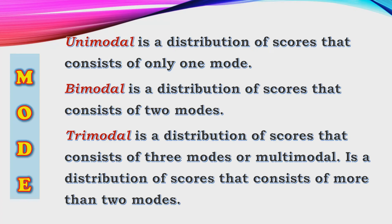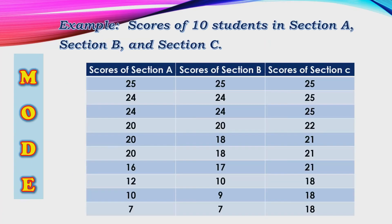Unimodal is a distribution of scores that consists of only one mode. Bimodal is a distribution of scores that consists of two modes. Trimodal is a distribution of scores that consists of three modes. Multimodal is a distribution of scores that consists of more than two modes.